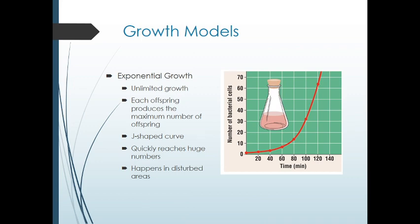Now let's switch topics a little bit and think about growth models. Populations grow in a variety of different ways. If you think about a new habitat opening up and species getting there, we can model this in different ways. One of the ways is with exponential growth, which is basically showing how populations can grow given their maximum number of offspring that they can have. If sea turtles were to have 100 babies one year and all 100 of them survived, population numbers start out slow and then start getting really high. Once you get to a decent number of bacteria, for example, their populations double very, very quickly.